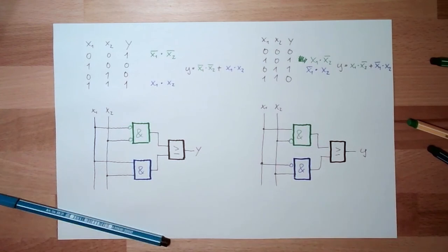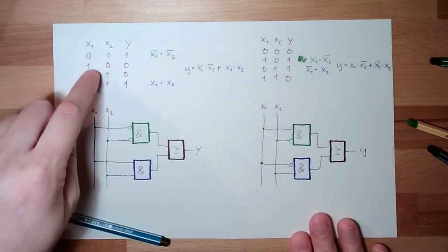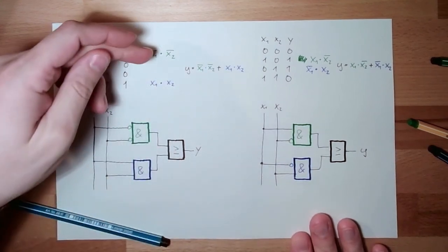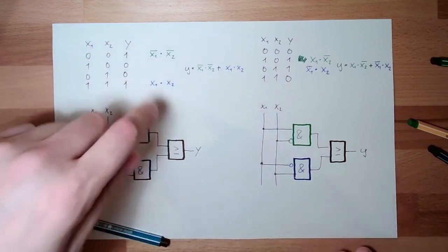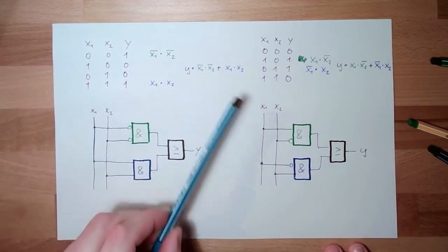I think you got the principle. Look at the lines, write the condition of the line, and every condition where the output shall be true needs to be OR together. That's basically it.